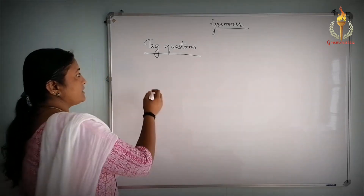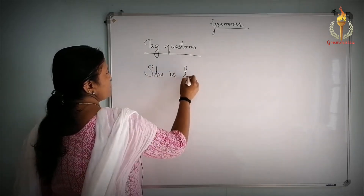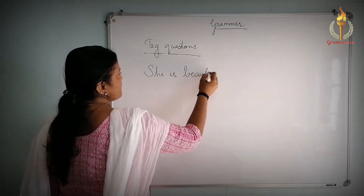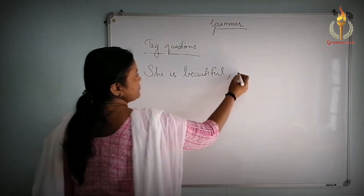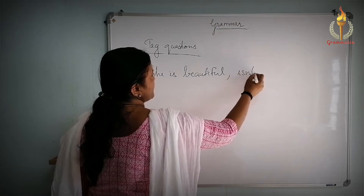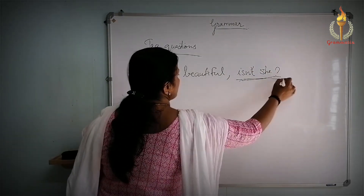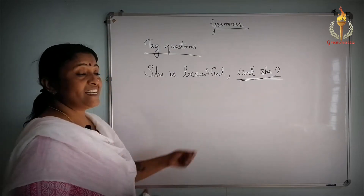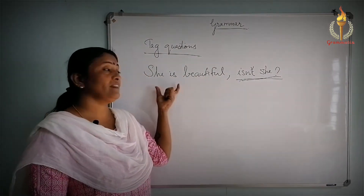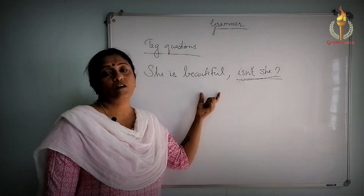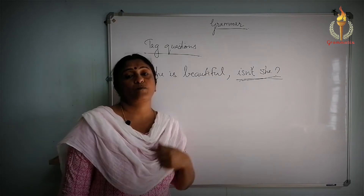For example, if I am writing 'She is beautiful,' your tag will be 'isn't she?' So this portion — 'isn't she' — placed at the end of a declarative sentence to confirm something is called a question tag.